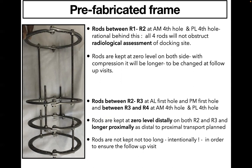Rods are kept at zero level on both sides. With compression, those rods become longer and are changed at each follow-up visit. Rods between the 2nd, 3rd, and 4th rings are kept at zero level distally and longer proximally to ensure adequate space for distraction. Rods are not kept too long — this is done intentionally to ensure that the patient comes for follow-up visits once the rod length is exhausted.